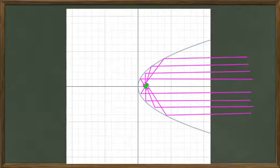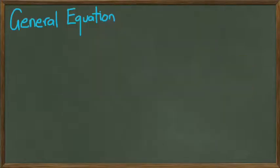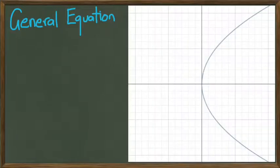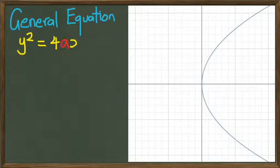Having a look at the general equation of this parabola, let's just draw it first. This is what this parabola is looking like. The general equation is y squared equals 4ax. The vertex is at (0,0).